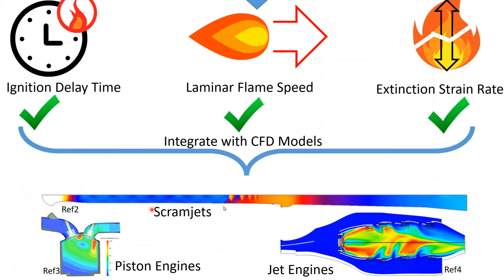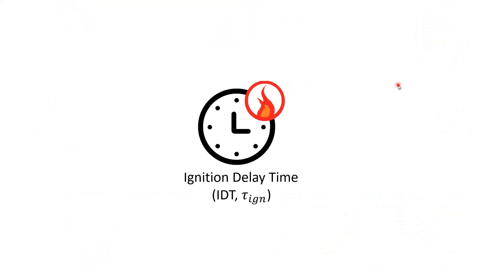I'm not going to talk at all about what laminar flame speed or extinction strain rate is. I'm only going to focus on the ignition delay time, which is usually referred to as IDT or tau ignition.